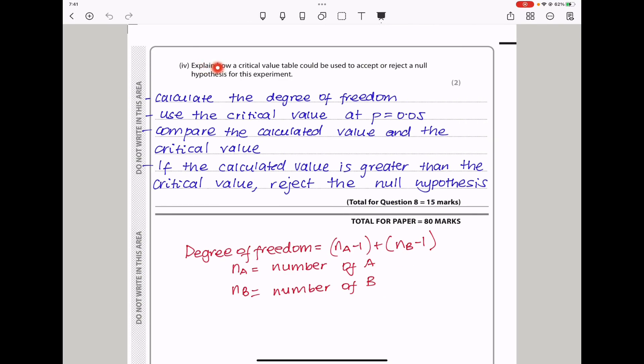Finally, they say explain how a critical value table could be used to accept or reject a null hypothesis for this experiment. You need to calculate the degree of freedom and use the critical values at P equals 0.05, then compare the calculated value and the critical value. If the calculated value is greater than the critical value, then you can reject the null hypothesis. This is how you calculate the degree of freedom. Numbers in A minus 1 plus numbers in B minus 1, and then you would get the degree of freedom. These questions are rare in AS Bio, but they are common in Unit 6 A-level biology.